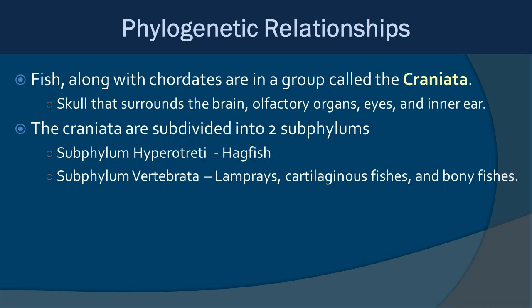The Craniata are divided into two subphyla. The first is Hyperotreti, which includes hagfish. Then we have subphylum Vertebrata, which you should be pretty familiar with because you're one of them. Here I've listed only the fish versions of Vertebrata — remember, there are plenty of others like mammals. Today we're mostly going to be focusing on bony fish, but lampreys and cartilaginous fish are in here as well.